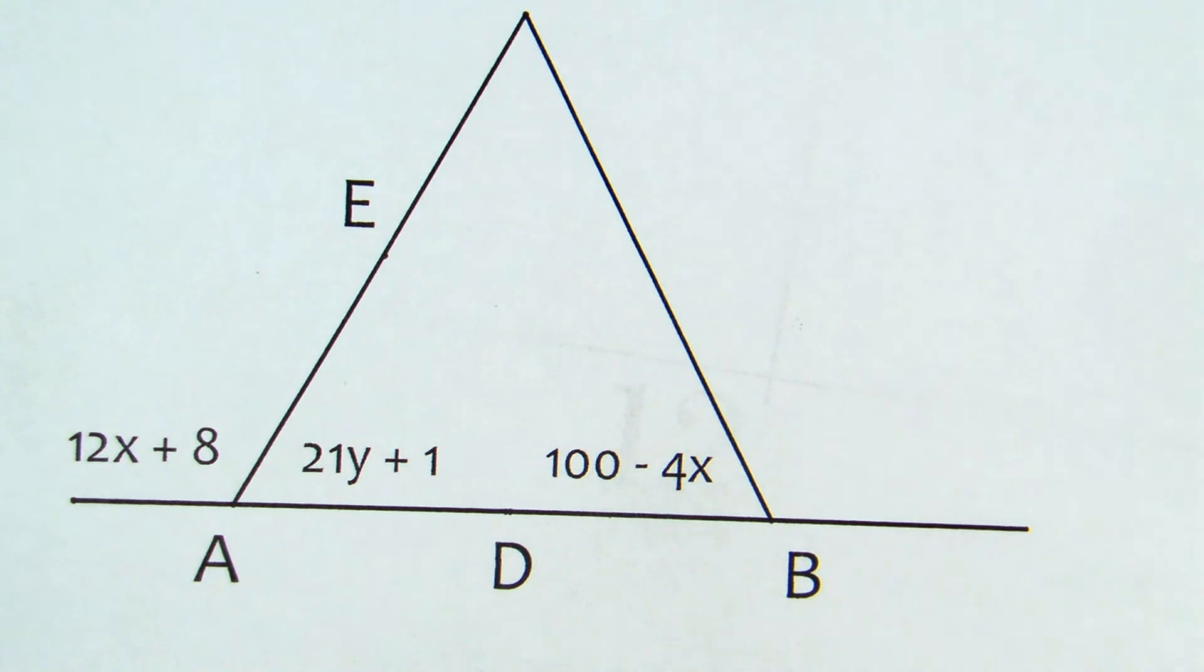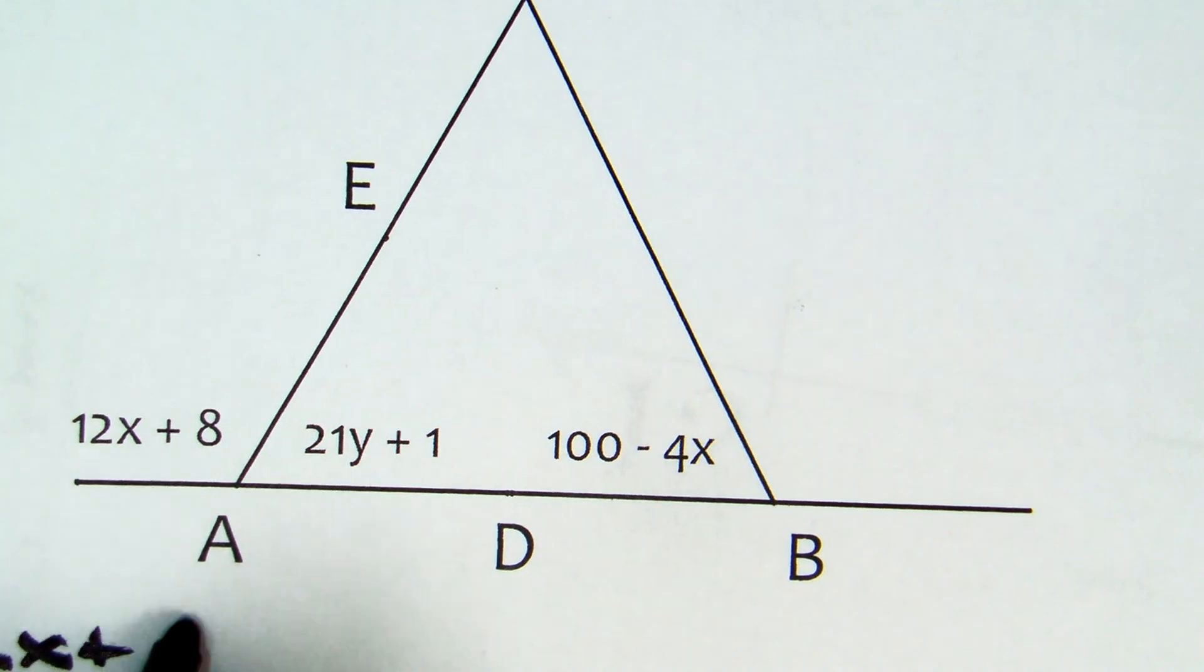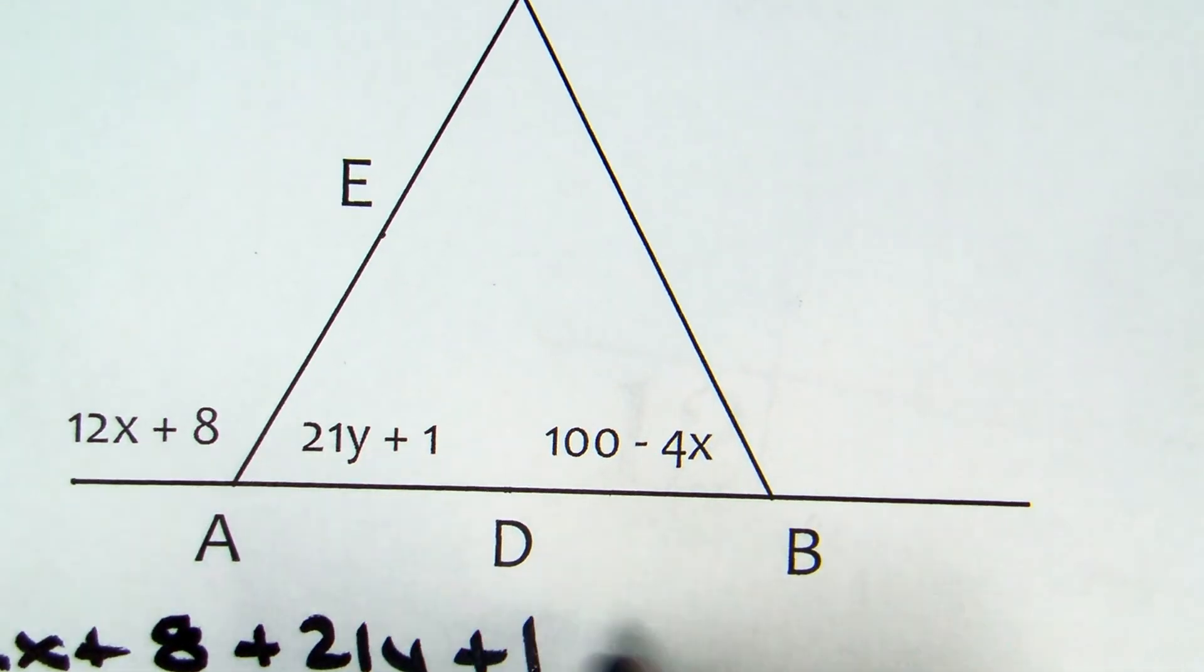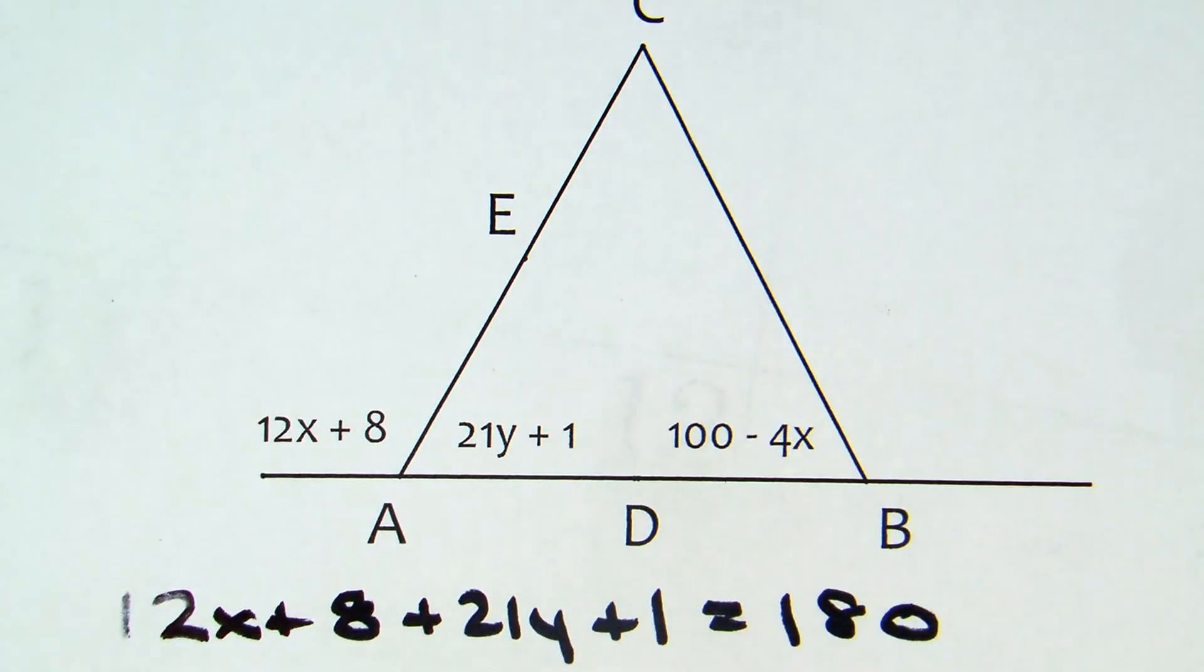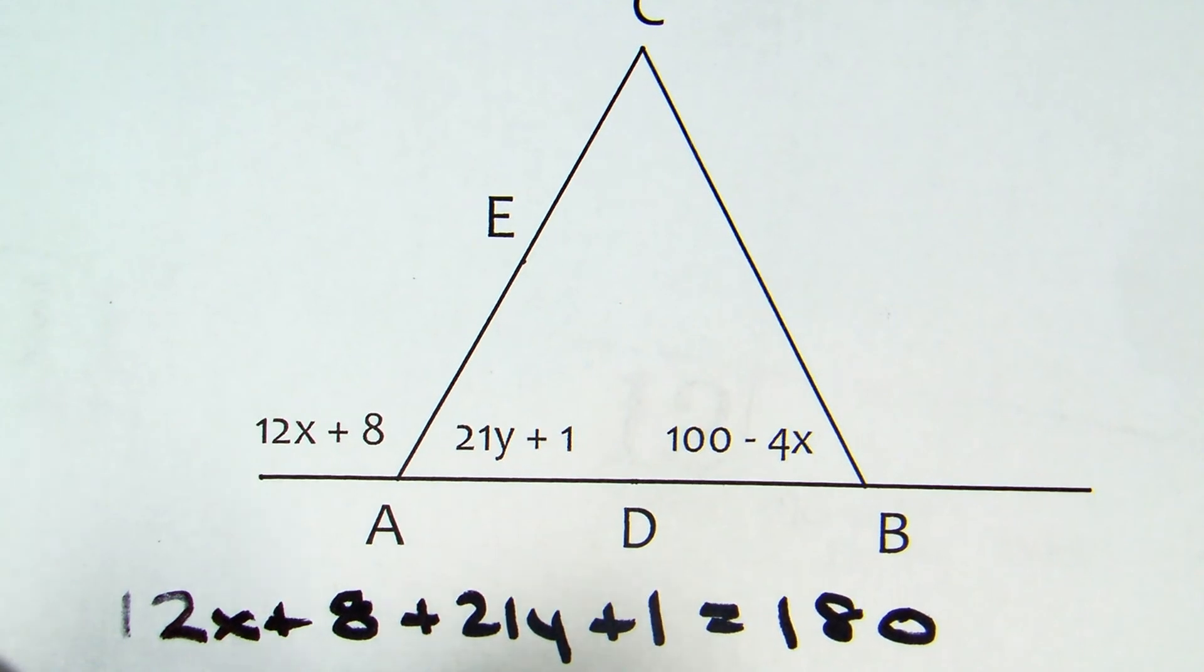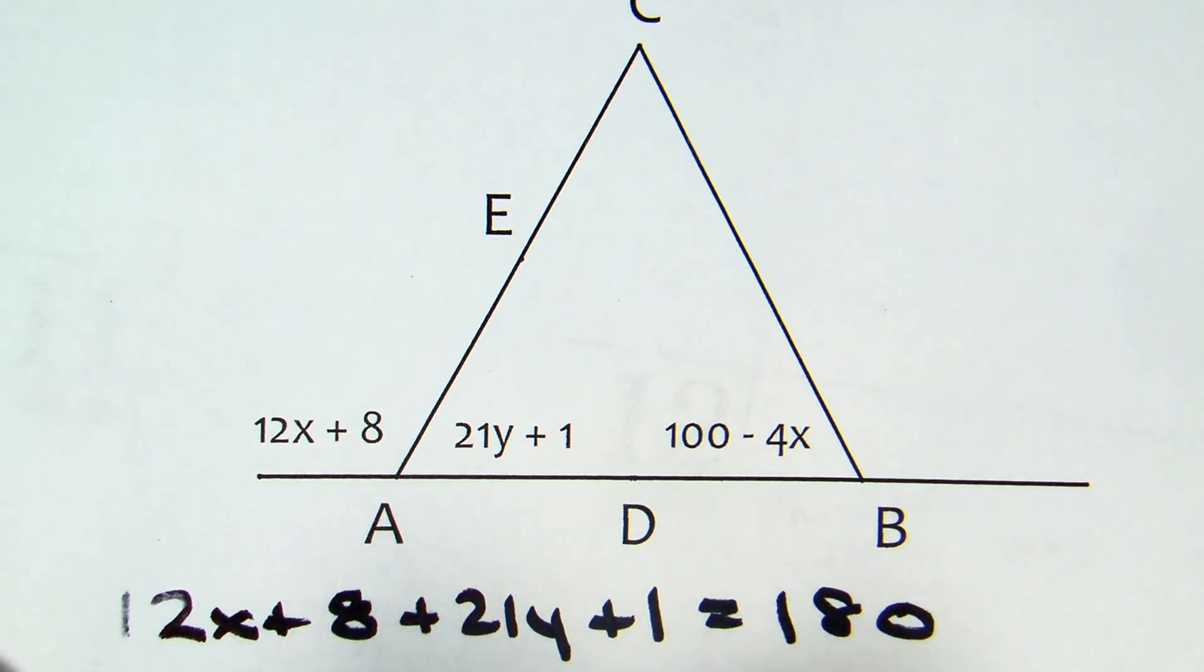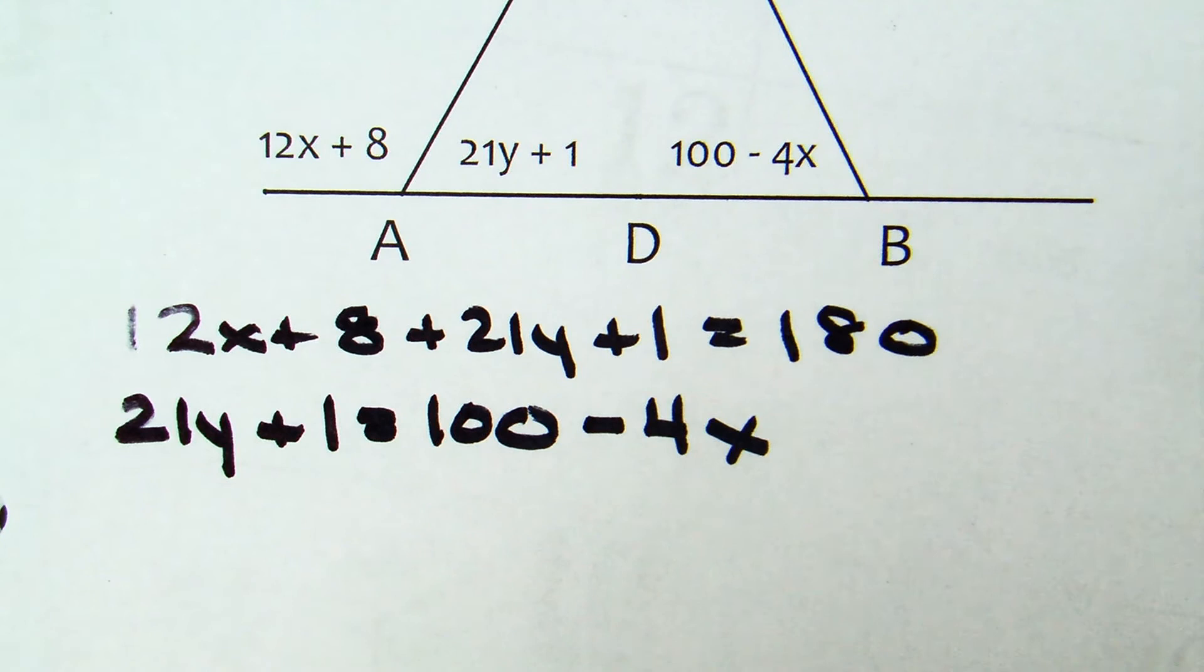One of those systems is based upon the fact that those two angles are congruent. So 12x plus 8 plus 21y plus 1 equals 180, because those two angles form a linear pair. And then the congruent ones, 21y plus 1 equals 100 minus 4x. You're showing linear pairs add up to 180 and base angles are congruent.